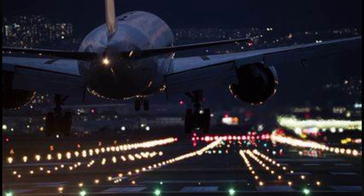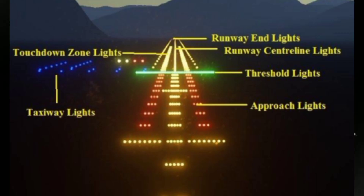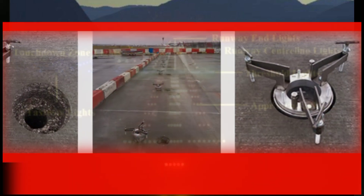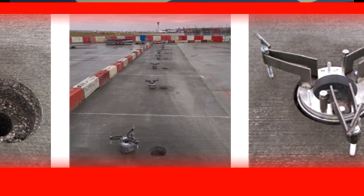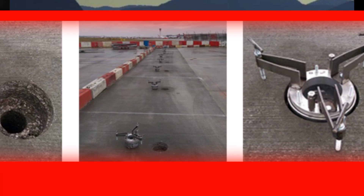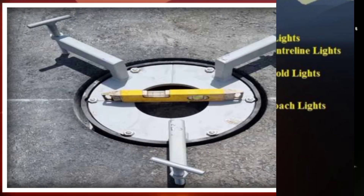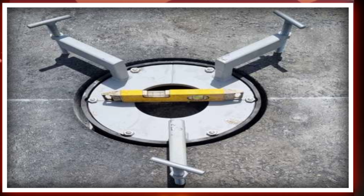Precision Approach Path Indicator, PAPI, is a visual aid installed alongside airport runways to assist pilots in maintaining the correct glide path during their approach for landing. The primary function of PAPI lights is to provide precise vertical guidance to the aircraft, ensuring a safe and accurate descent to the runway. PAPI lights provide pilots with a clear visual indication of whether they are too high, too low, or on the correct glide path during their approach. The lights are arranged in a row, typically consisting of four light units, and are visible from a considerable distance away from the runway threshold.